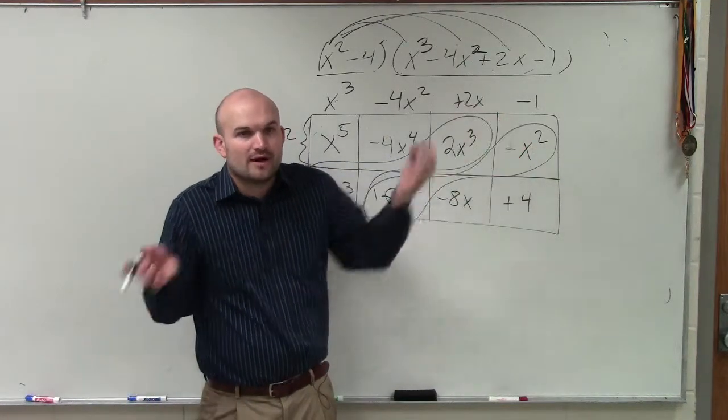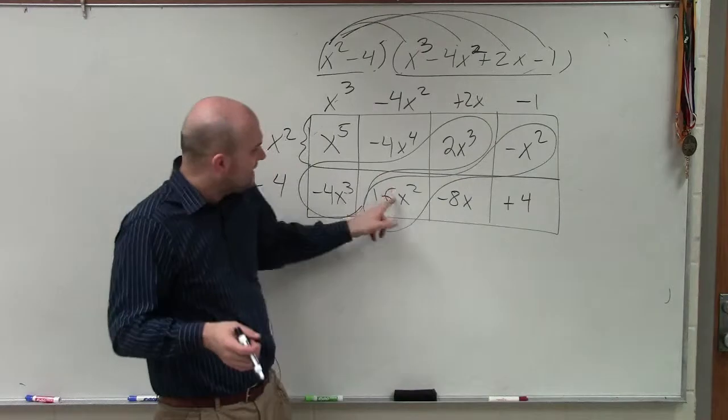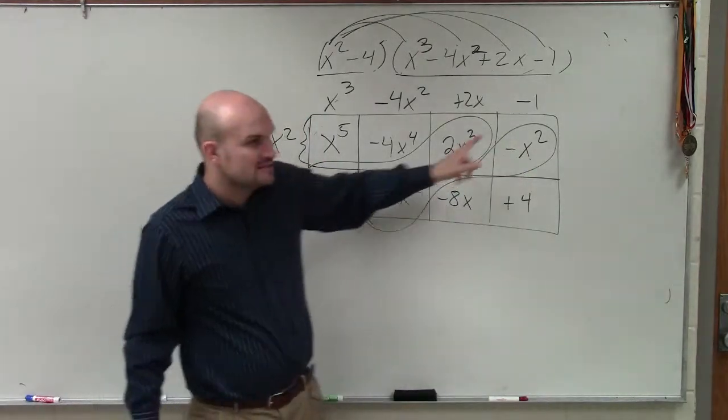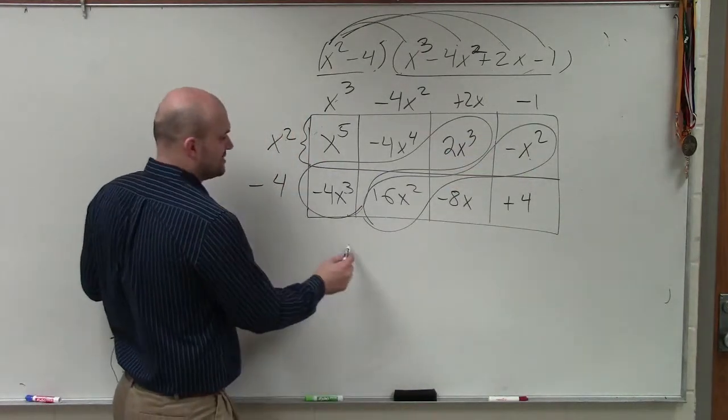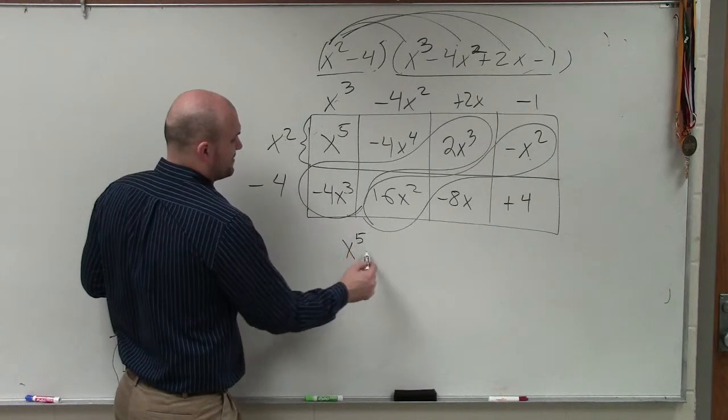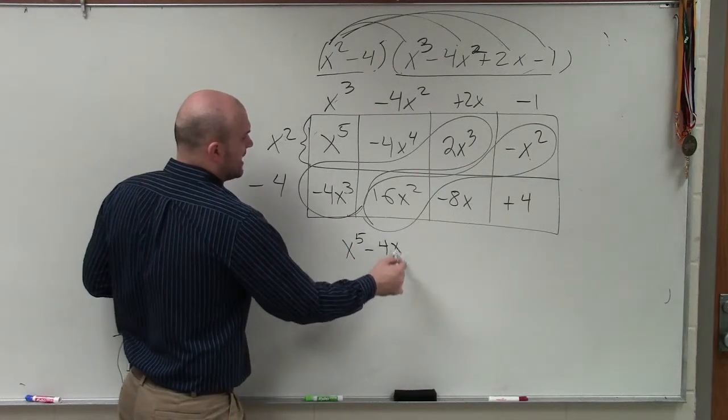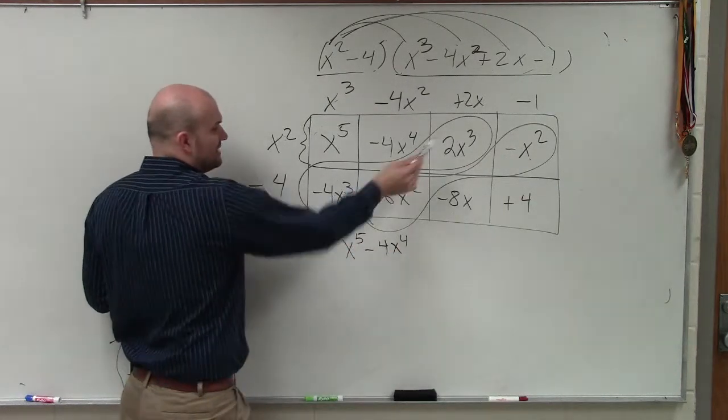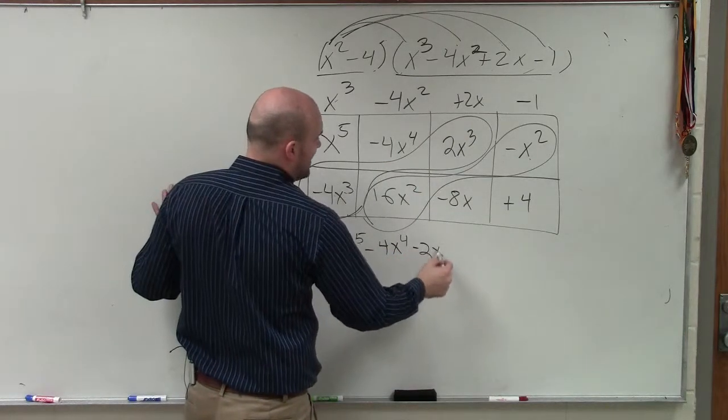So now, when I want to rewrite this as my final answer, I can combine these together. So my final answer in descending order is x to the fifth minus 4x to the fourth. Combine these two to give you negative 2x cubed.